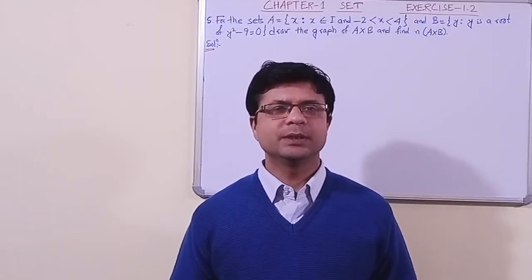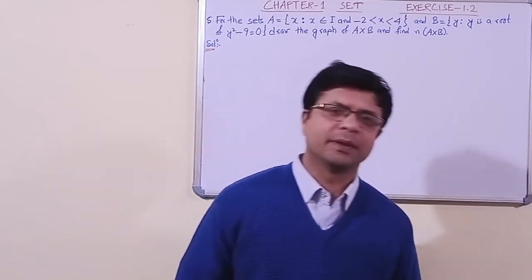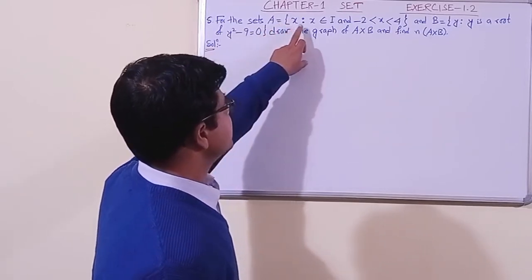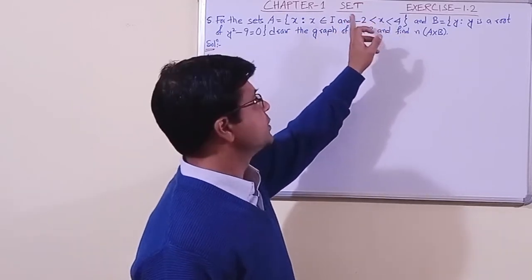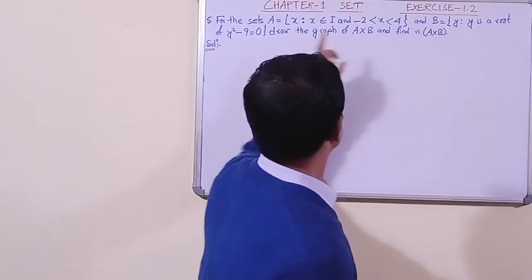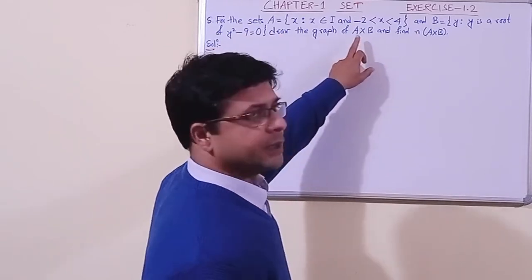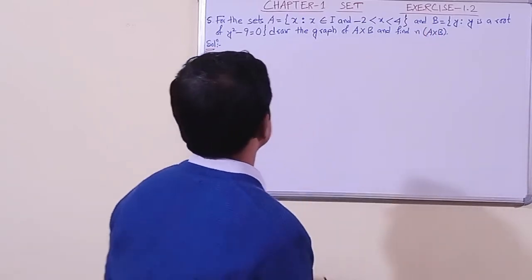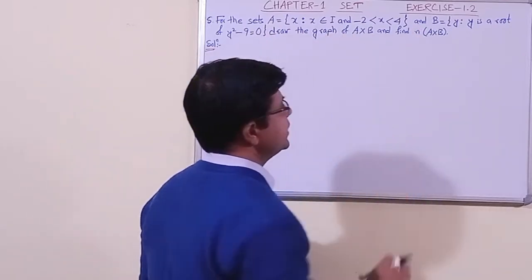Hello students, we are in Chapter 1, Exercise 1.2, question number 5. For set A, x is an element such that x belongs to the set of integers and x lies between minus 2 to 4. Set B has element y such that y is a root of the equation y squared minus 9 equals 0. We need to draw the graph of A cross B and find the cardinal number of A cross B.